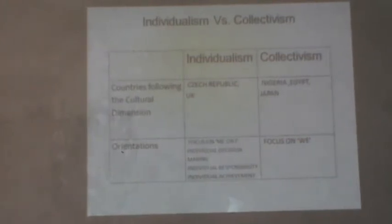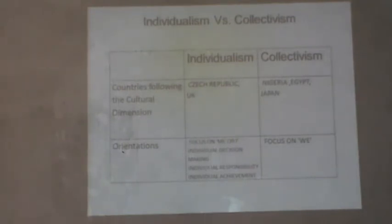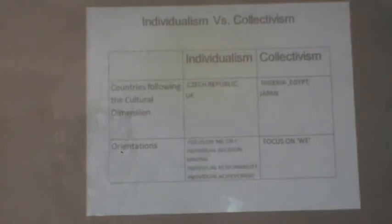The second dimension is individualism versus collectivism. Under individualism — countries like Czech Republic and UK — the focus is on 'I': individual decision-making, individual responsibility, and individual achievement. Under collectivism — countries like Nigeria, Egypt, and Japan — the focus is on 'we': togetherness and group orientation.